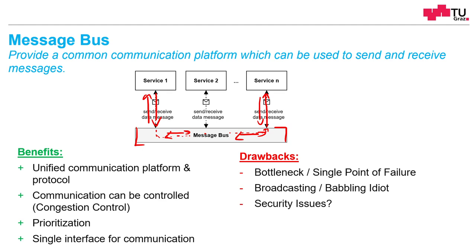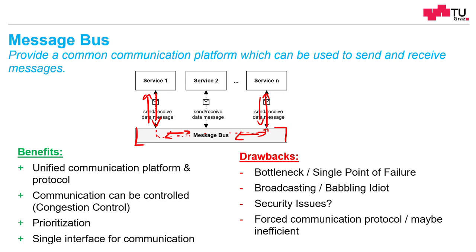What about security issues? If anyone can connect to this message bus, this also means that anyone can read all the messages which are sent over this bus. How can this be avoided? Always think of doing end-to-end encryption. The communication protocol is forced — we force any communication partner to use the same protocol, and this protocol may be inefficient. For example, it may include some header data, footer data, padding, encryption, security information, priority information, quality of service information, and so on. Maybe some single application doesn't need all this stuff. Depending on the protocol, this can be quite inefficient, but many protocols are pretty dynamic here and cope for this.